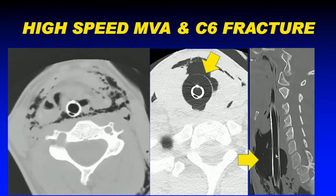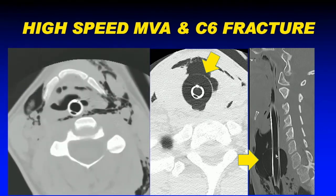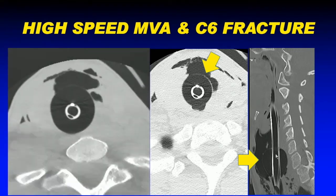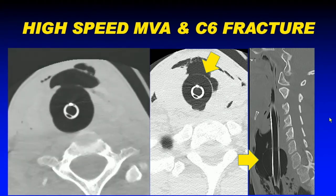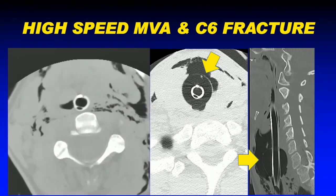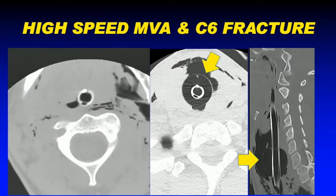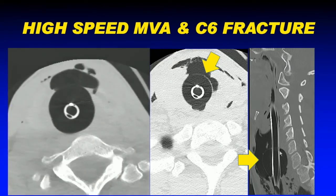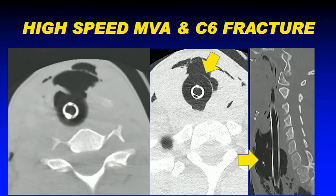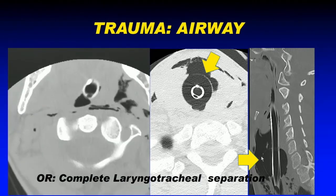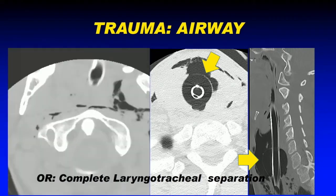A patient with a high-speed motor vehicle accident and a severe C6 vertebral injury showed extensive gas bubbles in the soft tissues of the lower neck extending into the upper mediastinum. On CT, the endotracheal tube balloon showed an abnormal configuration — the anterior and posterior portions were different in size and shape from each other. In the operating room, a complete laryngeal-tracheal separation was found. Watch for this abnormal balloon configuration bulge in the trauma setting.